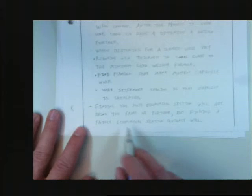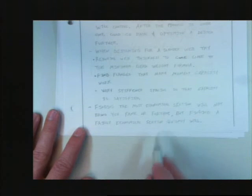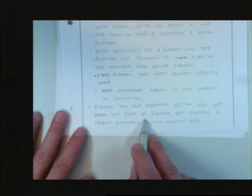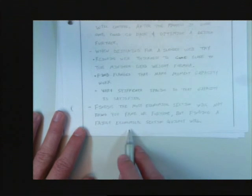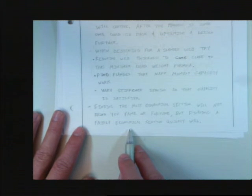So, after the process is over, one can go back and optimize the design further. When designing for a slender web, try reducing the web thickness to come close to the minimum deadweight formula. Find flanges that make moment capacity work, verify stiffener spacing so that the capacity is satisfied. So, I say this at the bottom. Finding the most economical section. By economical section, I mean cheapest. Finding the cheapest section will not bring you fame or fortune. You will not become famous for finding the cheapest girder. But if you can find it quickly, you can become famous. Because you can make a lot of money. You can do it quick. It's about speed.